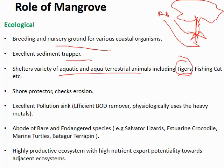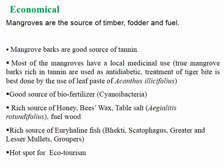The mangrove is the only home of the Bengal tiger in the world — the Sundarbans — and also a habitat for the fishing cat. It protects the coastal zone as already discussed, and it is an excellent pollution sink absorbing heavy metals. It is also home to rare Indian species like Batagur baska, one of the most endangered species, along with the estuarine crocodile, water monitor lizard, marine turtles, and king cobra. It is a highly productive ecosystem with high nutrient export potential.